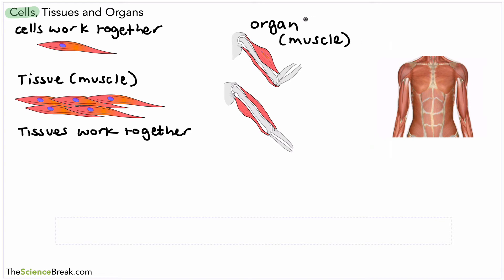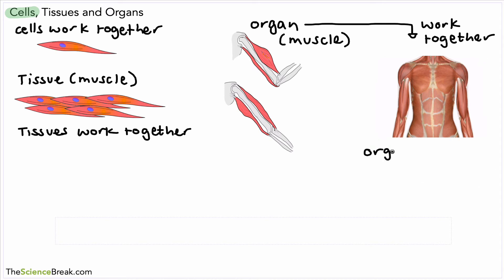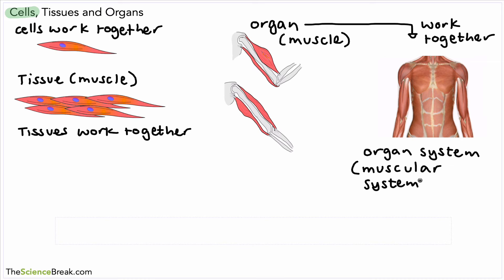Now muscles don't just work alone — there are many of them in the body. Here we have a whole bunch of different types of muscle in the body, and when we have many of those organs, many of those muscles working together, the organs can work together and when they do that we call that an organ system. This particular one is called the muscular system.